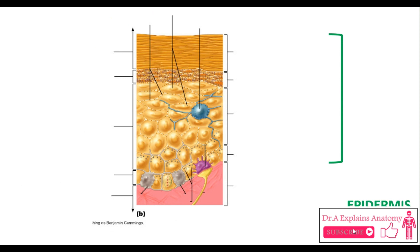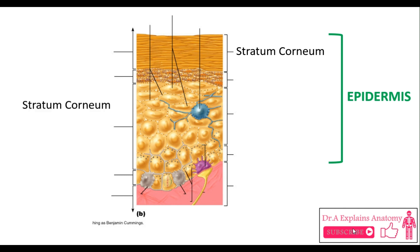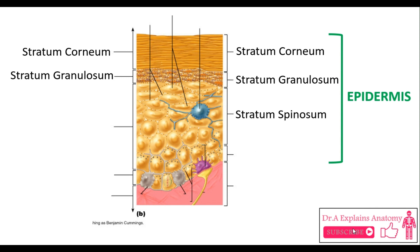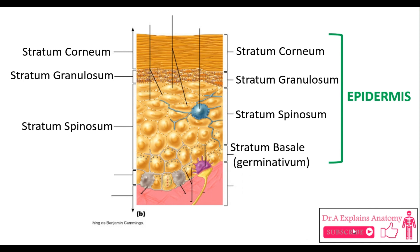Moving to the layers of the epidermis. First, we have the stratum corneum, which is the most superficial layer. Second, we have the stratum granulosum. Notice the granules — the purple dots in this layer. The third layer, we have the stratum spinosum. The fourth layer, at the base of the epidermis, we have the stratum basale, also called stratum germinativum.